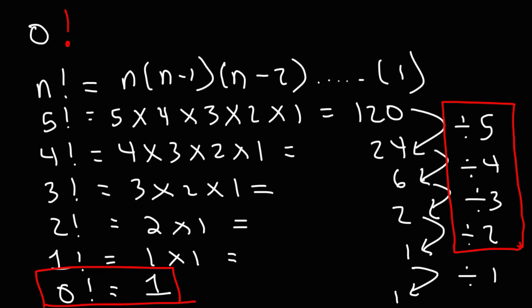That's a quick and simple way to understand why 0 factorial equals 1. There are other methods you could use to illustrate this point, but we'll stick with this one.